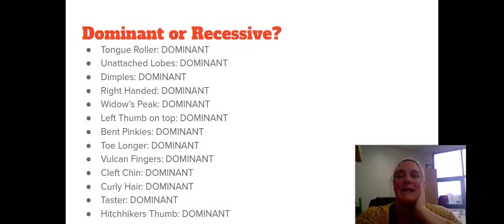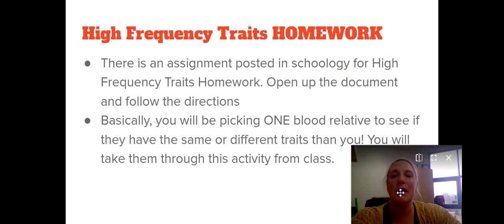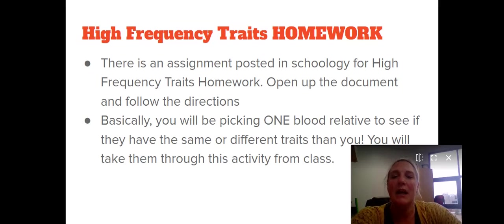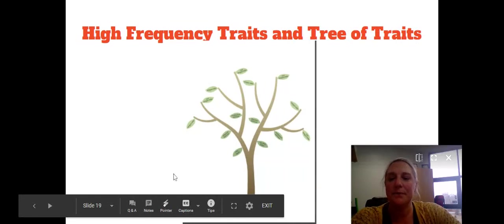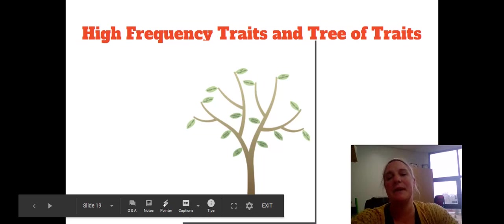Now we're going to go through and collect some data from the class. I'm going to end this video and your live teacher is going to take over to start collecting data from the class. For homework, you're going to do what we just did with at least one blood relative — someone actually related to you by blood — to see if they have the same or different traits than you. If you do more than one, that's great, but you have to do at least one. We're also going to do an activity where you get a leaf that goes on a tree, and you'll see what branch your leaf falls under — whether you're on a common branch or a less common branch.